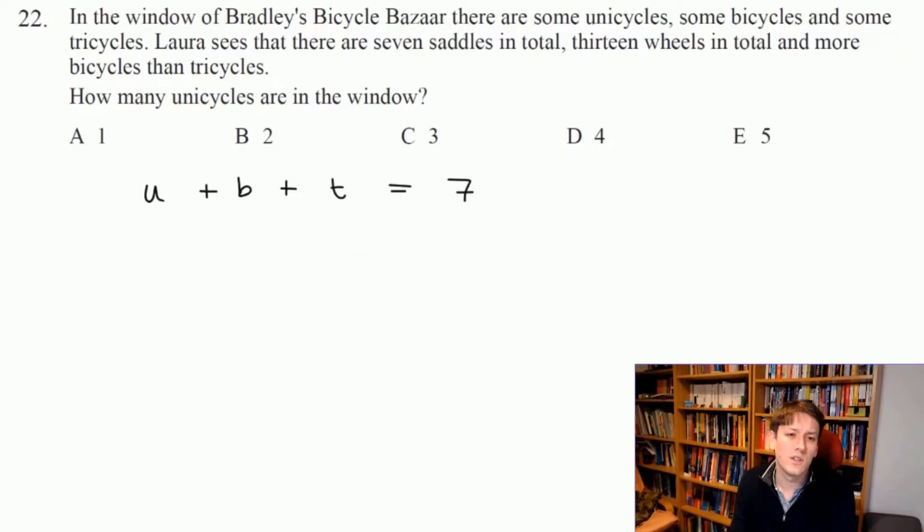13 wheels in total. A unicycle has one wheel, a bicycle has 2 wheels, and a tricycle has 3 wheels. So if I do number of unicycles plus 2 times the number of bicycles plus 3 times the number of tricycles, that gives me the number of wheels, which must be 13. And we also need the number of bicycles to be bigger than the number of tricycles.